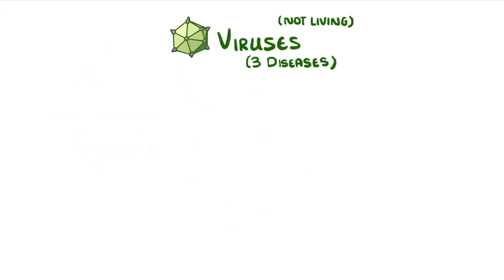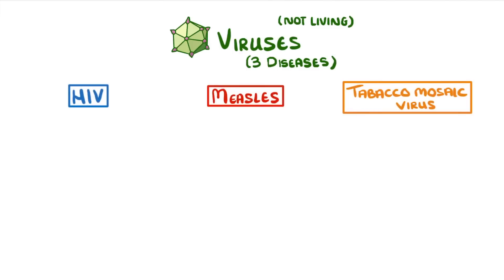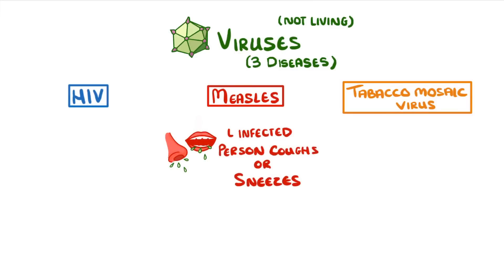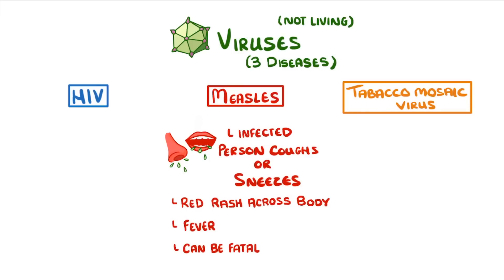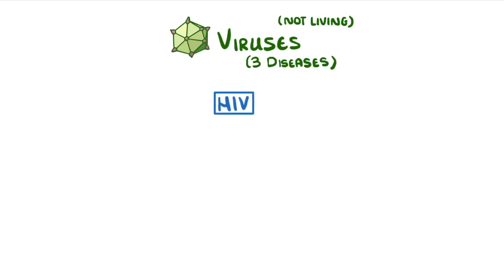The three examples of viral disease we're going to look at are measles, HIV, and tobacco mosaic virus. The measles virus is spread by droplets when an infected person coughs or sneezes. It generally causes people to develop a red rash across most of their body and a fever — a really high temperature where you generally feel unwell. Although it can be really serious and sometimes even fatal, it's luckily really rare in the UK as nearly everyone is vaccinated against it when they're young.